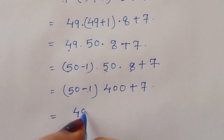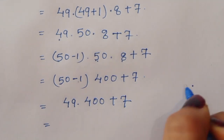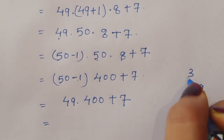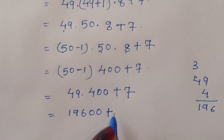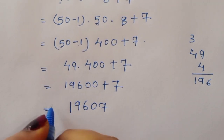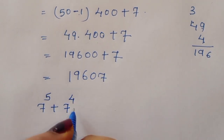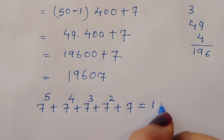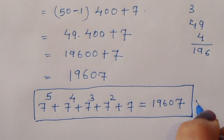Now 49 times 400 plus 7: since 49 is 50 minus 1, and 49 times 4 gives us 196, so 49 times 400 is 19600. Adding 7 gives us 19607. So 7 power 5 plus 7 power 4 plus 7 power 3 plus 7 power 2 plus 7 is equal to 19607. Thank you.